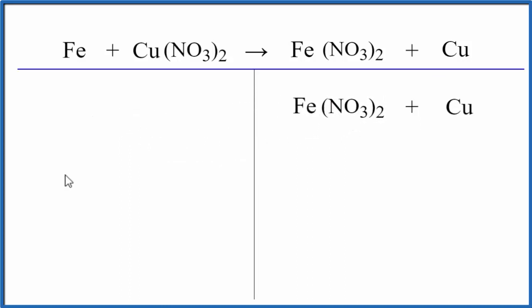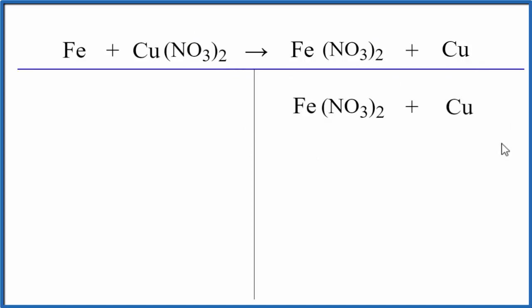In chemical equations, we're just rearranging things. Sometimes we need to add coefficients to balance. But in this case, because the iron just pushed the copper out and replaced it, everything's the same on both sides of the equation. This equation is balanced.